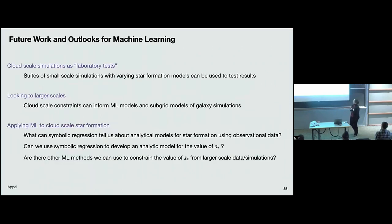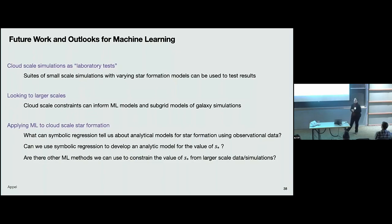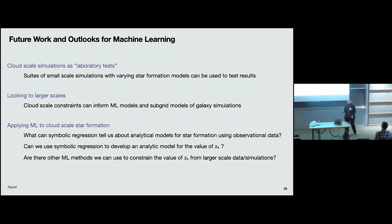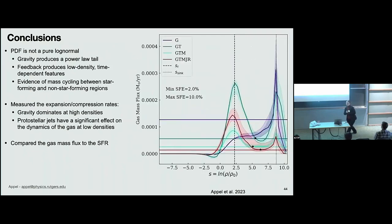Before I leave, I'd like to say a few words about how this connects to machine learning and data science. I hope I've made a case for these small turbulent boxes as laboratory tests — we can use suites of smaller simulations to vary models and parameters and test results from other investigations. Looking the other way, I'd really like to find ways my work can inform subgrid models. I'm particularly excited to see how I can take this a-star quantity and adapt it into a useful subgrid model for galaxy simulations. And I think it would be really interesting to use symbolic regression to tell us more about analytic models of star formation at smaller scales.